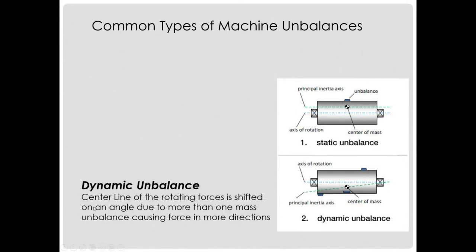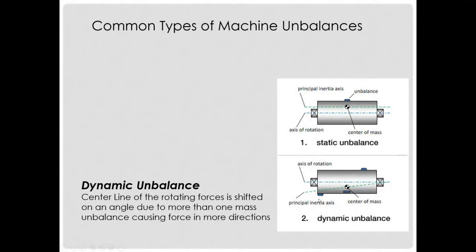Dynamic unbalance is a little different — the center line of the rotating forces is shifted at an angle due to more than one mass unbalance causing force in more directions. The unbalance is off to the side and the shaft then kind of wobbles in a couple of different dimensions.